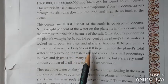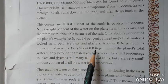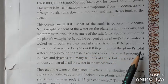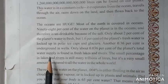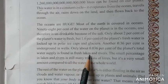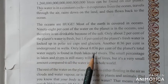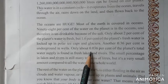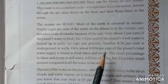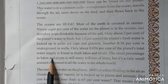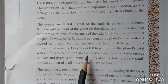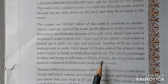Only about 0.036% of the planet's total water supply is found in fresh lakes and rivers. That means just 0.036% of all water is in fresh lakes and rivers.